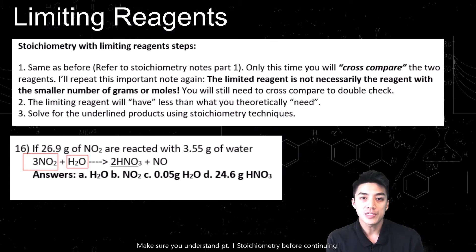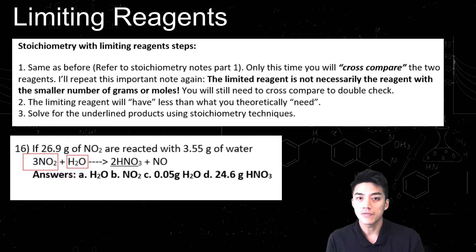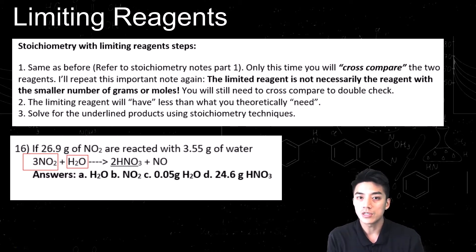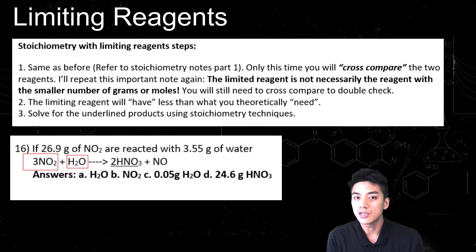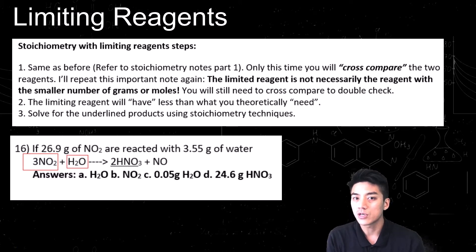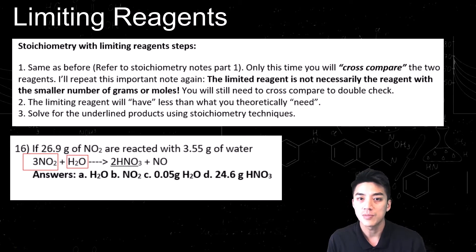You have steps for limiting reagents outlined in your notes. It still falls back on basic principles of stoichiometry, which I covered in part one of this series. Most problems will give you a balanced equation, and first you need to figure out which one of the two reactants is the limiting reagent. You'll do something called a cross-comparison to figure out which one is the limiting reagent — like figuring out which one is the frosting and which one is the tires. Once you find the limiting reagent, you can find out how much of the product can be produced.